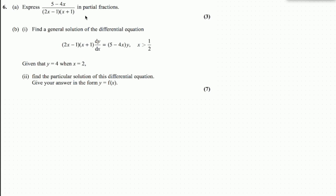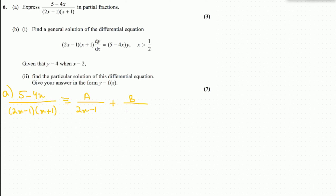To do this, we write 5 minus 4x divided by 2x minus 1 times x plus 1 as identical to a over 2x minus 1 plus b over x plus 1. Now we multiply both sides by 2x minus 1 times x plus 1.